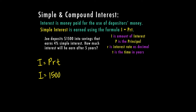Then we're going to multiply that times the percent, and we have to change that to a decimal. Your decimal goes at the end of the number and you move it back two places, so that would be 0.04 or four hundredths, times T which is your time. The time here is in years, so we're going to multiply that by five.